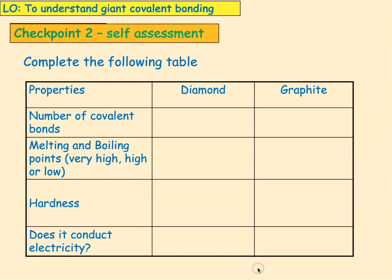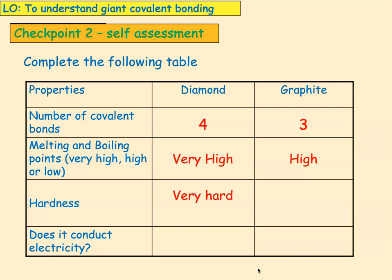Let's self-assess our work. The number of covalent bonds in diamond is four and the number in graphite is three. Diamond has a very high melting and boiling point; graphite has a high melting and boiling point. Diamond is very hard and graphite is not very hard — it's quite brittle because of the layers. Diamond cannot conduct electricity but graphite can.